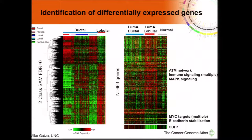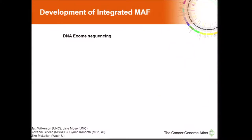We next asked whether we could identify genomic alterations, specifically point mutations, within ductal and lobular tumors. One concern with whole exome sequencing was that lobular tumors tend to have a much lower cellularity, which led us to worry about underpowering our ability to identify variants. So in addition to whole exome sequencing, we used a program called UN Seeker, developed by Matt Wilkerson at UNC, which combines RNA sequencing with DNA sequencing analysis to identify additional variants specifically in low-purity samples.